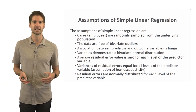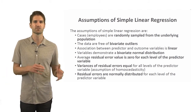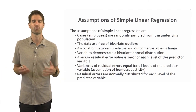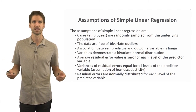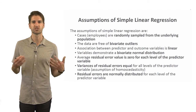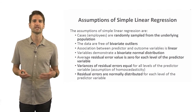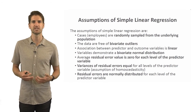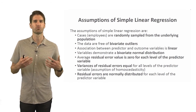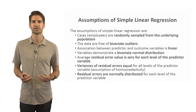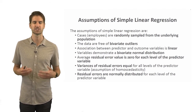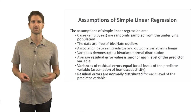Some deviations from these assumptions are acceptable — we just want to make sure things aren't overtly or very severely violated. The final assumption is that the residual errors are normally distributed for each level of the predictor variable. These are the assumptions that need to be met before running a simple linear regression. If you don't meet these assumptions, you'll run into interpretation issues that can affect the accuracy of the inferences you make based on the data.